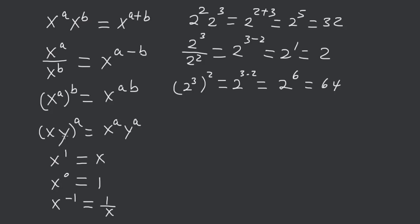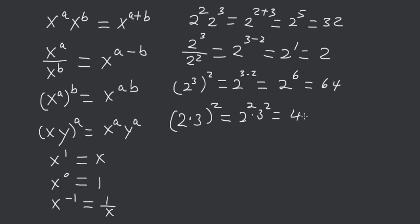You have x times y all to the a is equal to x to the a times y to the a. So if you have 2 times 3 squared, this is equal to 2 squared times 3 squared, which is equal to 4 times 9, which is equal to 36.